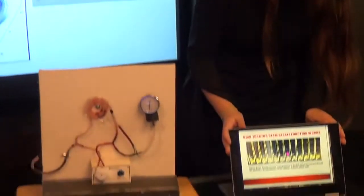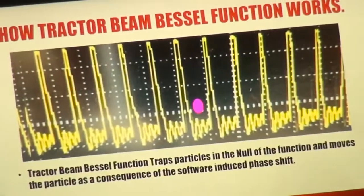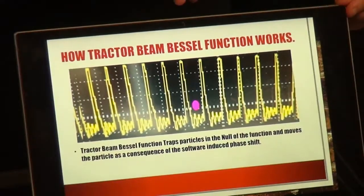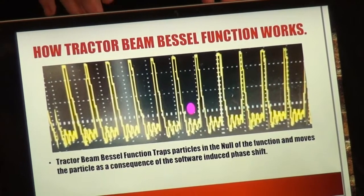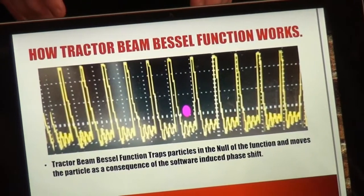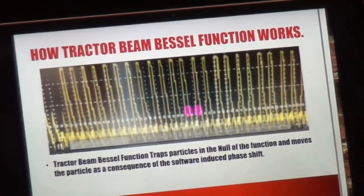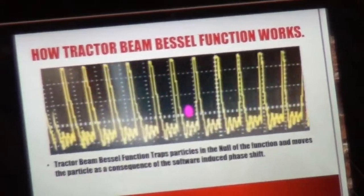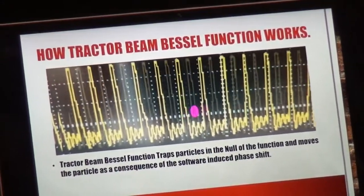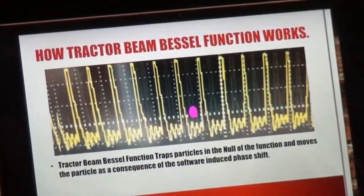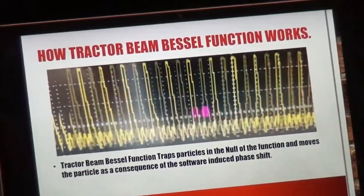Here in this simulation you can see the mathematically generated Bessel function tractor beam waveform and the red dot in the middle represents the target particle that I'm speaking about. Now, the target particle is trapped in the nulls of the waveform and if I press play to show the waveform in action you can see that the waveform is actually moving, it's being phase shifted multiple times and what that's doing is it's taking the target particle and shifting it around with it. It's pushing and pulling it.